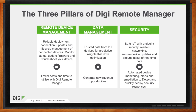The next step is data management - trusted data from IoT devices for predictive insights and driving optimization. This allows you to generate new revenue opportunities; if you're aware of what your devices are doing, you have insights to implement them in different ways to drive revenue or be more efficient. Finally, and most importantly, is security - safe IoT with endpoint security, resilient networking, secure device updates, and secure intake for real-time data. This allows automated device monitoring, alerts, and remediation to detect and quickly deploy security responses.